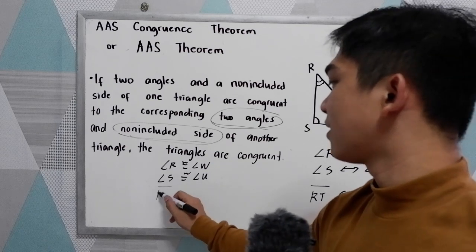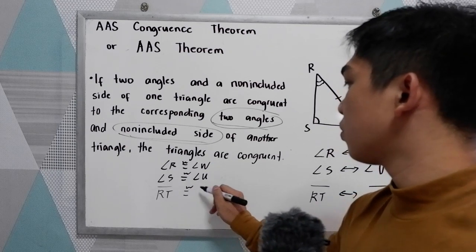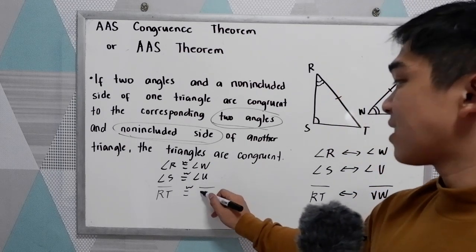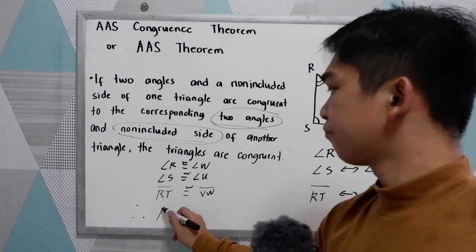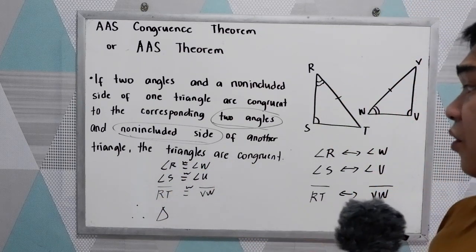Then side RT is congruent to side VW. Therefore, the two triangles are congruent.